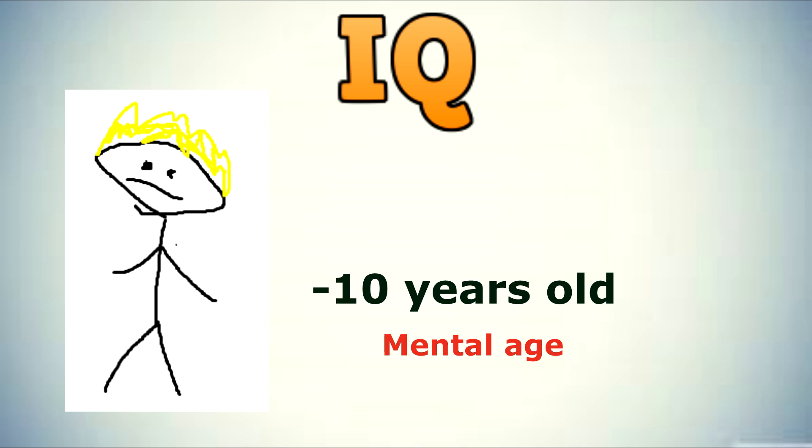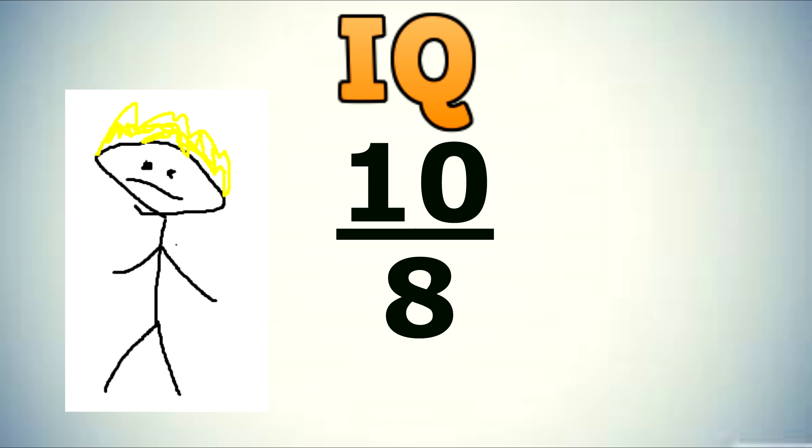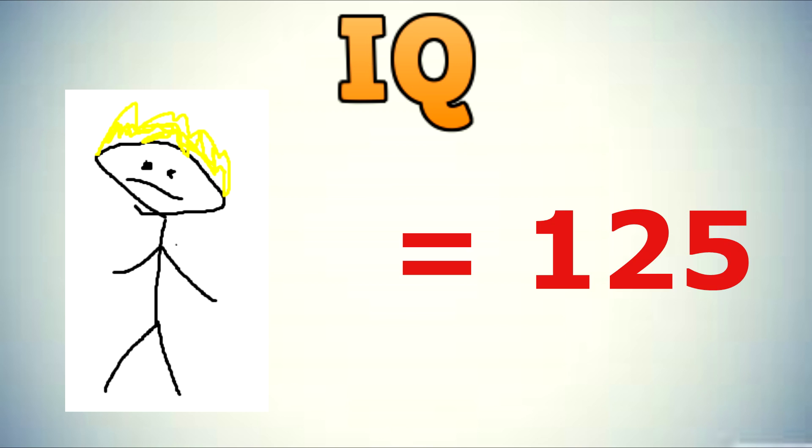This means Timmy has a mental age of 10 and a chronological age of 8. 10 divided by 8 times 100 equals 125. Timmy has an IQ of 125.